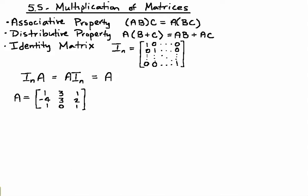Now we have some properties to go through with multiplication of matrices. Again, these are the same as multiplying with real numbers. You have the associative property telling us it doesn't matter which order you multiply.